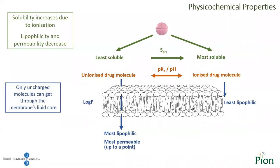Lipophilicity is described by the log P value and is the ratio between the solubility of neutral species dissolved in lipid and in water. The way drugs are absorbed into the human body is mostly via a process called passive diffusion, in which the neutral form of the drug enters the membrane by dissolving in the lipid phase. So pKa, log P, and solubility can help us understand this process.